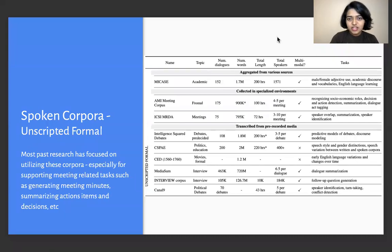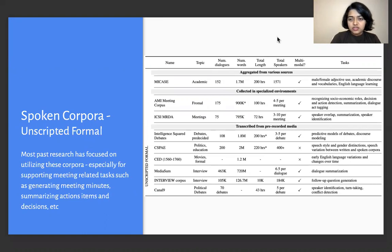Let's start by looking at each of the corpora in more detail. For each corpus, we identified the topic they were mainly talking about, the number of dialogues, the number of words, and the total length, along with the total number of speakers present in the corpus. We also looked at whether or not there were multimodal features associated with the corpus, and lastly we described some of the tasks in which these corpora have been used.